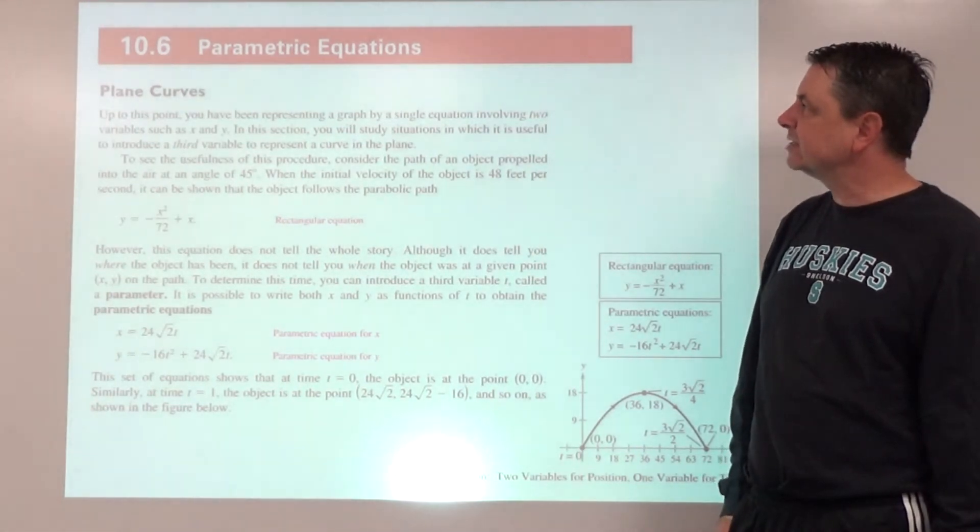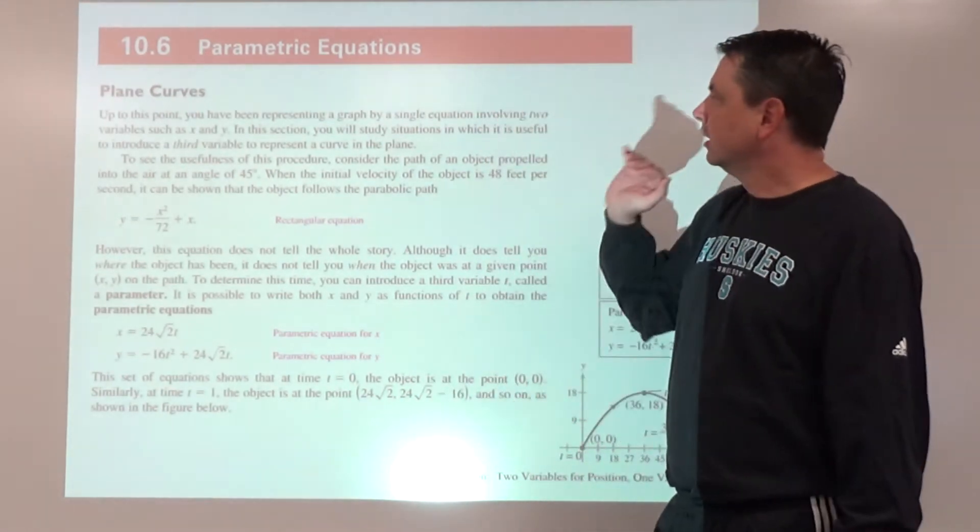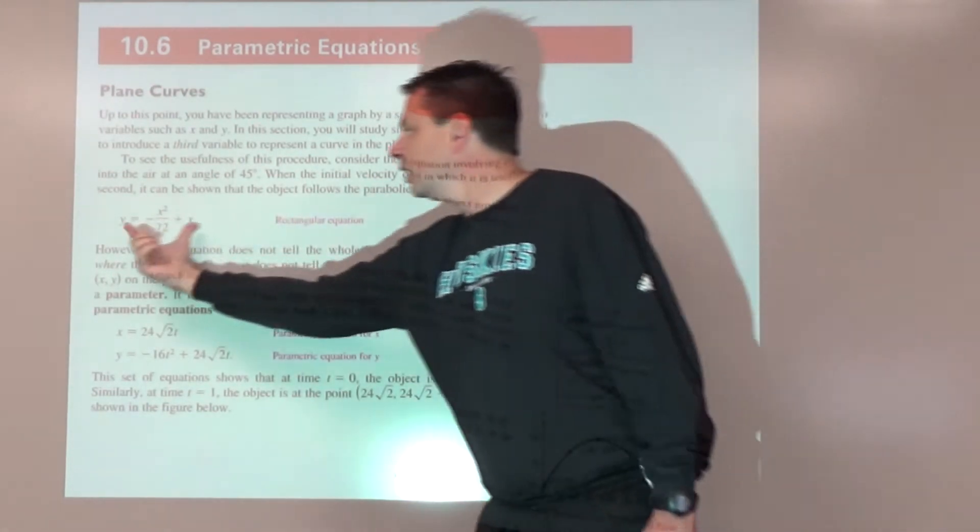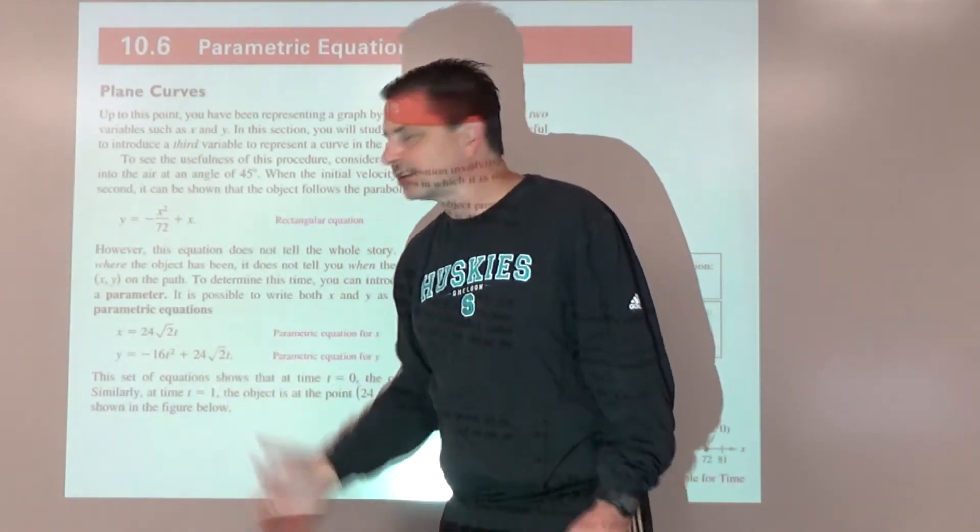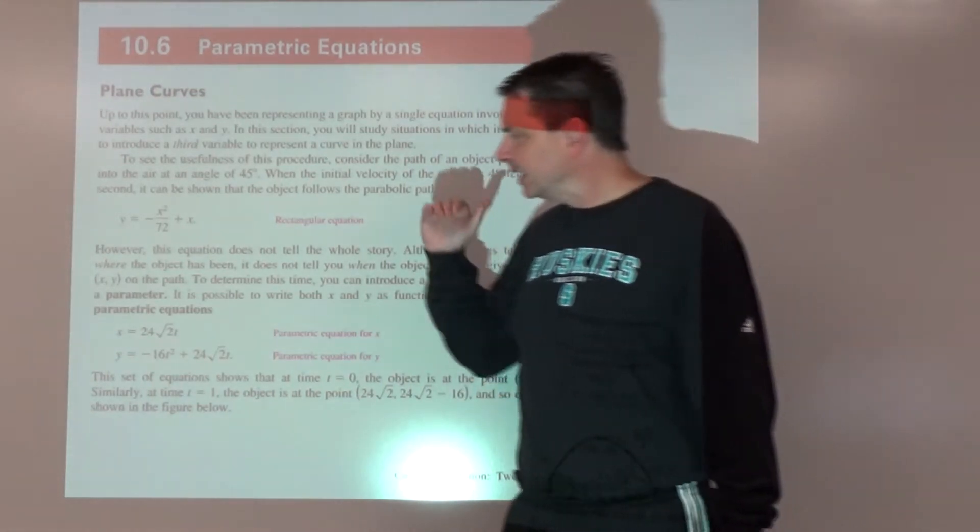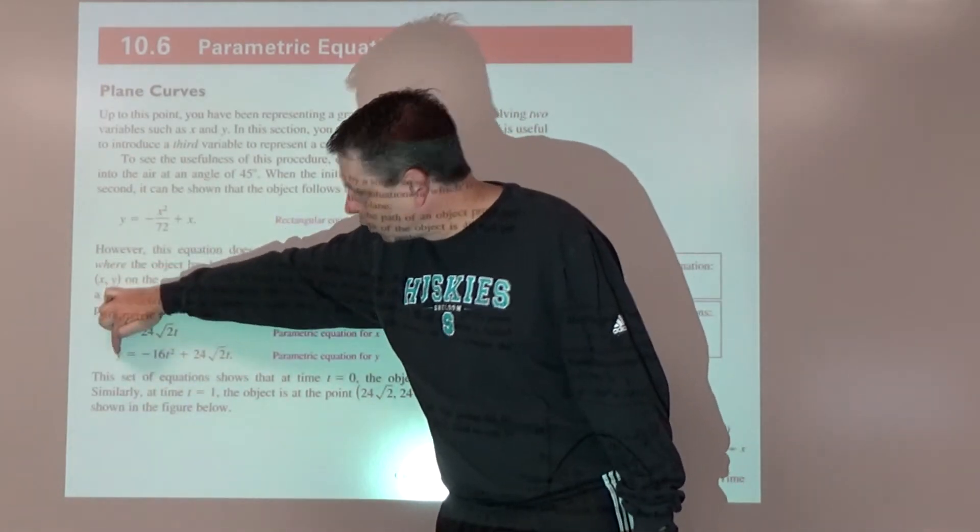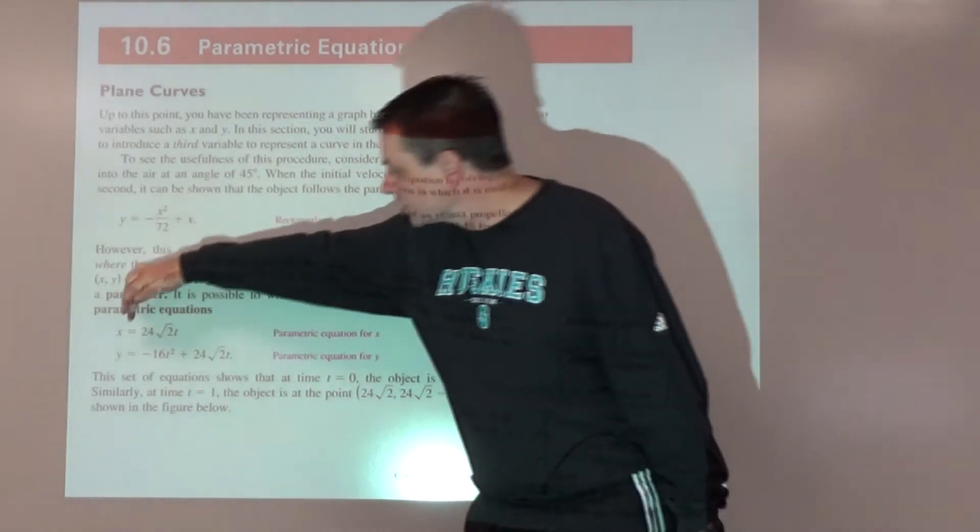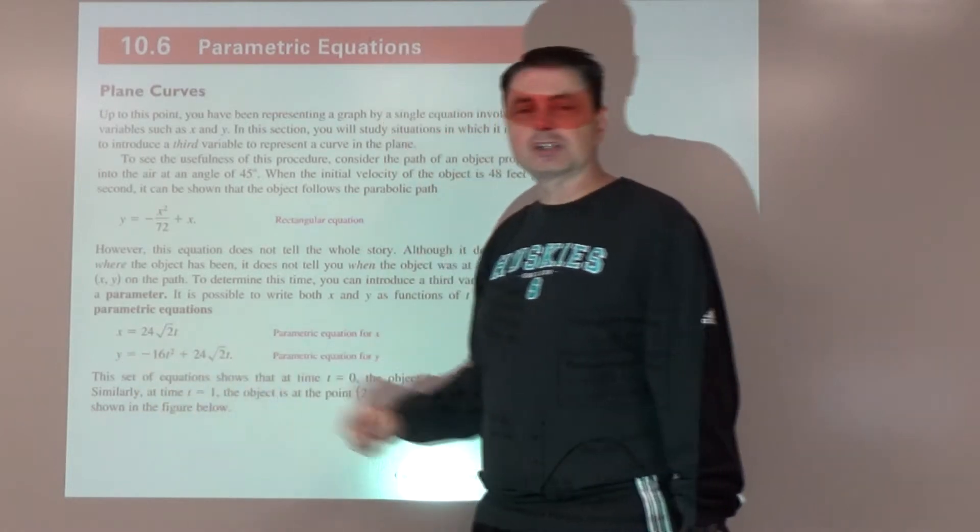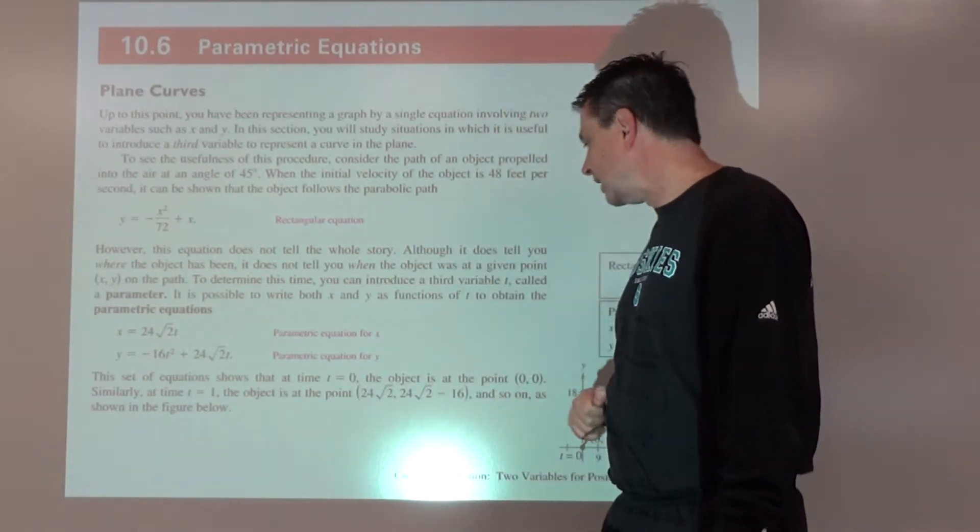Today's lesson is 10.6 parametric equations. We're talking about plain curves. Usually we have a single equation, two variables such as x and y, where y = -x²/72 + x, something like that. What we can do is, for all these points that are on that curve, we can define the x-coordinate and the y-coordinate in separate equations. The x-coordinate is some function of t, and y-coordinate is some function of t, where t is this other variable, and that is going to be known as the parameter.